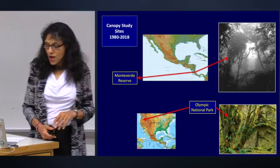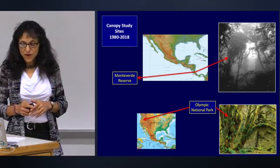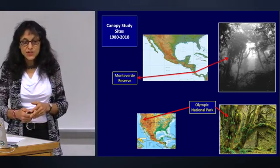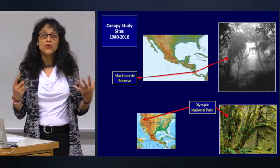I'll acquaint you with my two main field sites. One is Monteverde, Costa Rica, along the central cordillera — an amazing cloud forest driven by mist, fog, and wind. The second is the temperate rainforests of Washington State on the west side of the Olympic Peninsula, where you get massive accumulations of epiphytes and dead organic matter in the canopy.